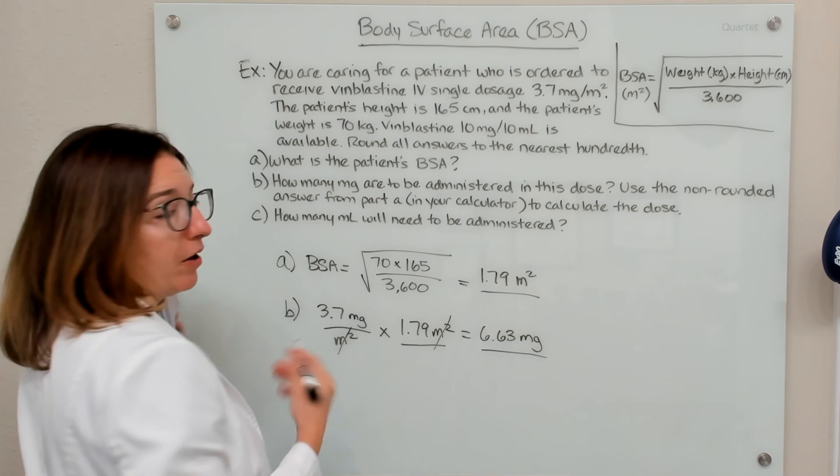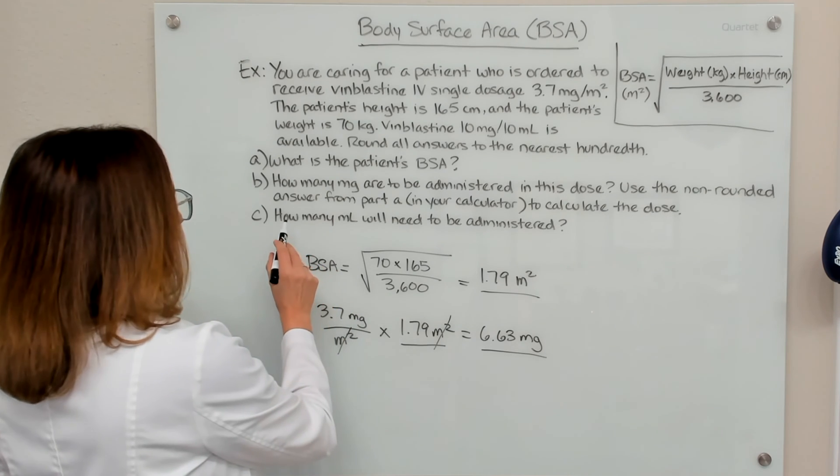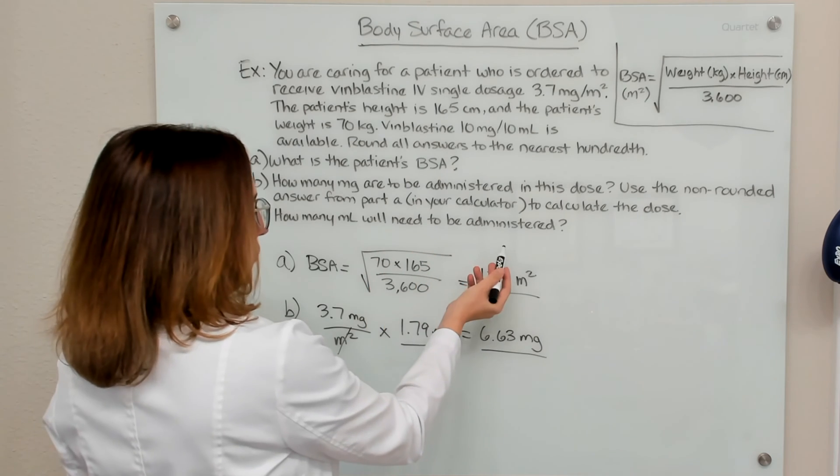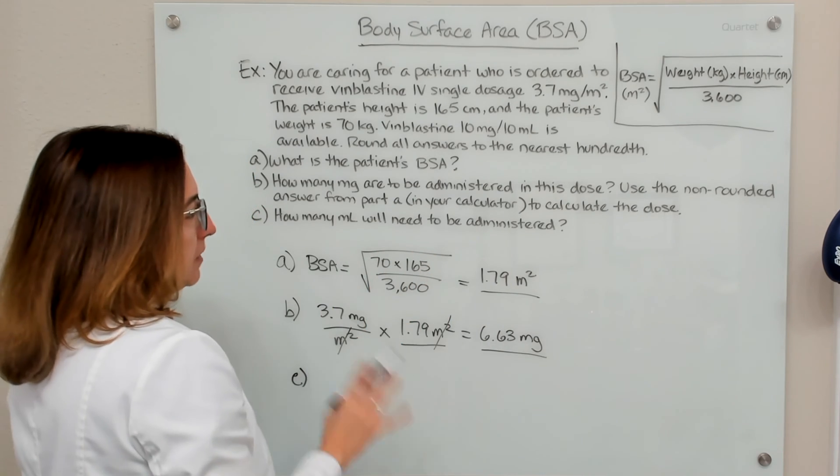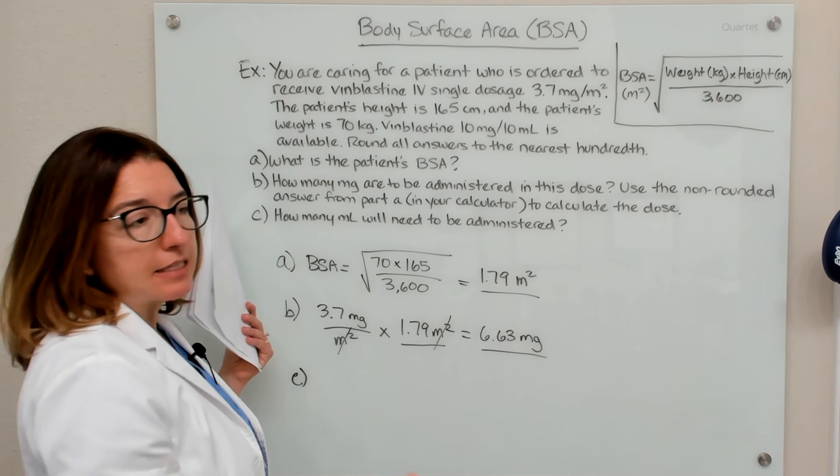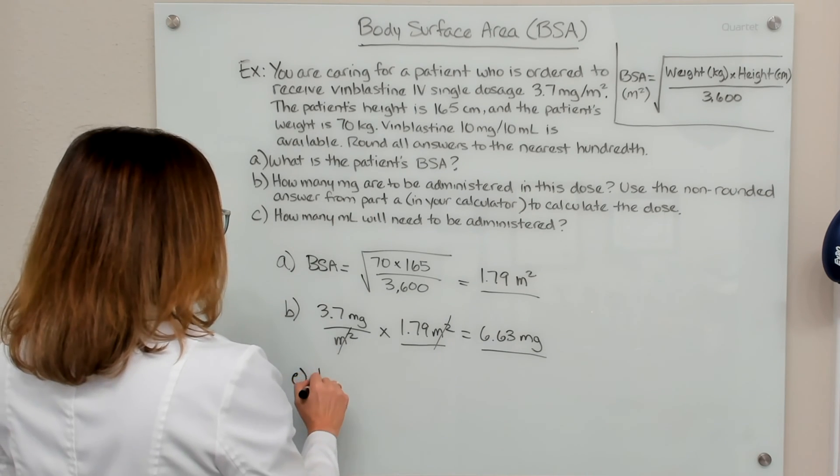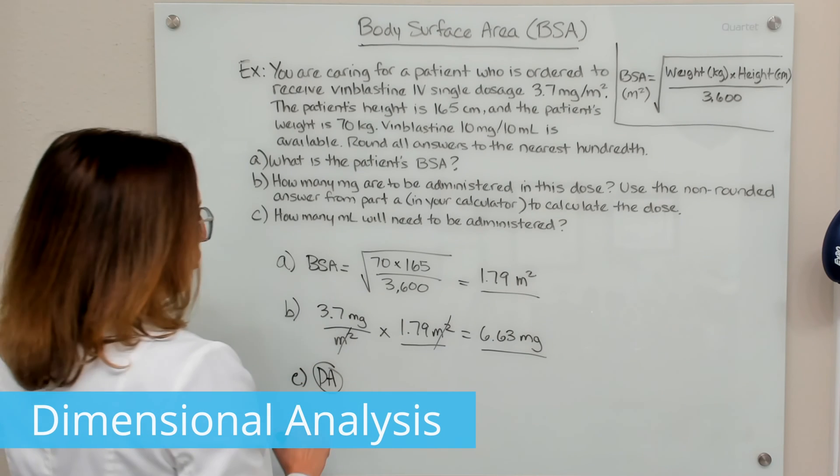All right, now let's work through part C of this problem, which asks us how many milliliters will need to be administered. So we can solve this part of the problem using dimensional analysis, ratio and proportion, or the formula method. So let's first solve it with dimensional analysis.